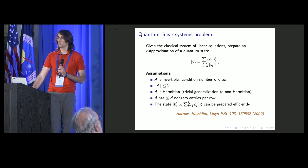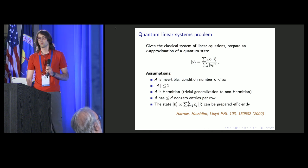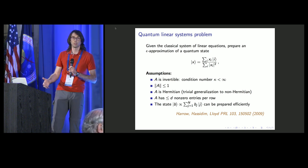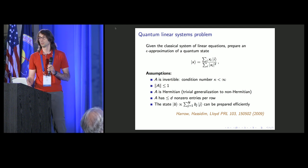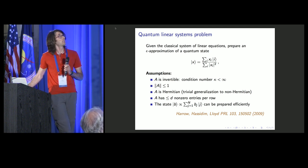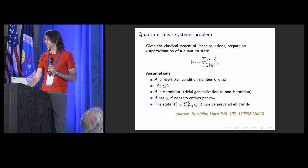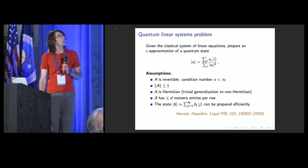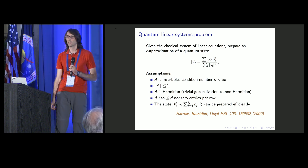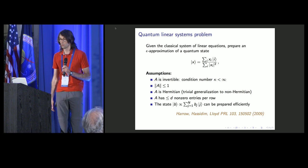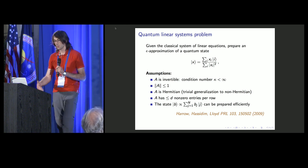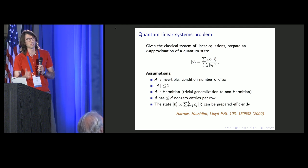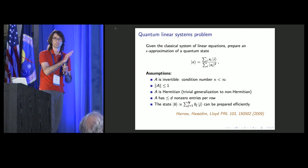Harrow, Hassidim, and Lloyd formulated a quantum version of this problem where the goal is not to write down this vector X, but instead to prepare a quantum state X, the amplitudes of which are proportional to the components of the vector. Under some assumptions, the quantum algorithm that's now referred to as the HHL algorithm was able to solve this quantum version of the problem exponentially faster than the classical algorithms solving the classical version of the problem.